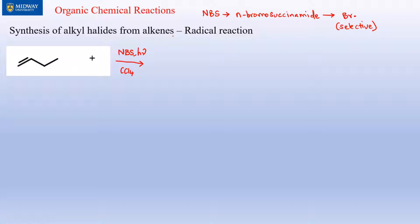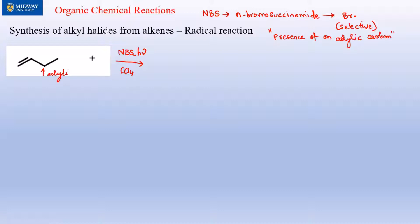For this whole NBS thing to work, a condition must be met: the presence of an allylic carbon. An allylic carbon is the carbon that is adjacent to the carbon containing the double bond. The NBS with hν (light) works specifically at allylic carbons.